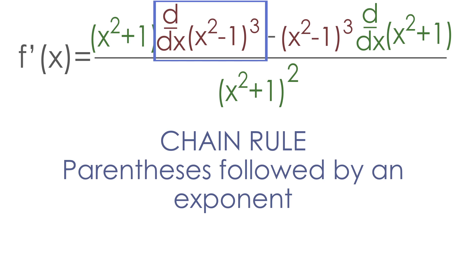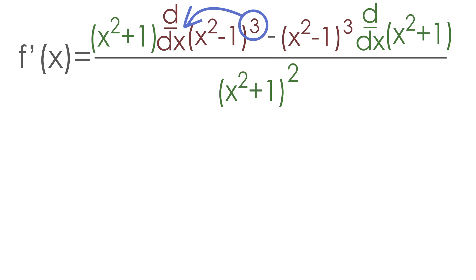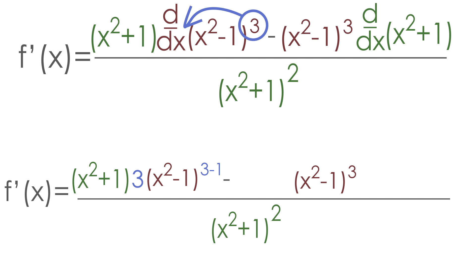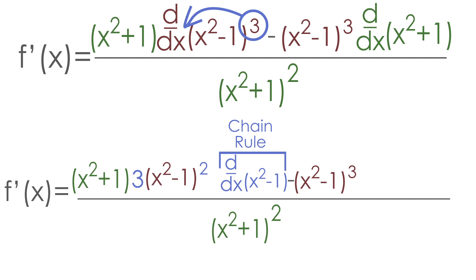Let's apply the chain rule. First, bring the exponent of three to the front and multiply it in front of the parentheses. The new exponent is three minus one, which equals two. Then we multiply by the derivative of the inside of the parentheses, which is the derivative of (x² - 1). The derivative of x² is 2x and the derivative of negative one is zero, so the inside derivative is just 2x.